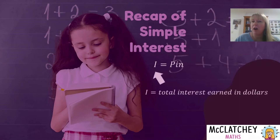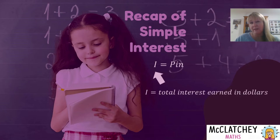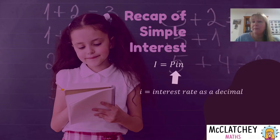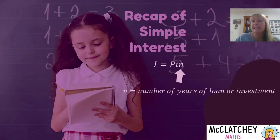So firstly we're looking at I. When we talk about simple interest we're talking about in the context of a loan or an investment. If this is an investment, it's the total interest that you earned in dollars over the lifetime of that investment; but if it's something that you've borrowed, it's going to be the amount of interest that you've paid. Capital P is the principal — the amount that you start with, either the amount you borrow or the amount you invest. I is your interest rate as a percentage turned into a decimal, so if it's three percent you change that into a decimal. And lastly, n is the number of years of the loan or the investment.